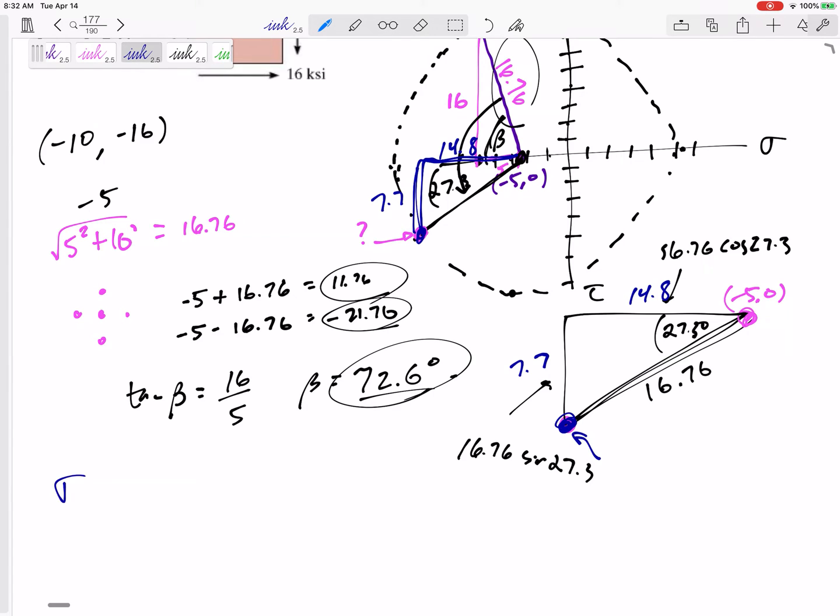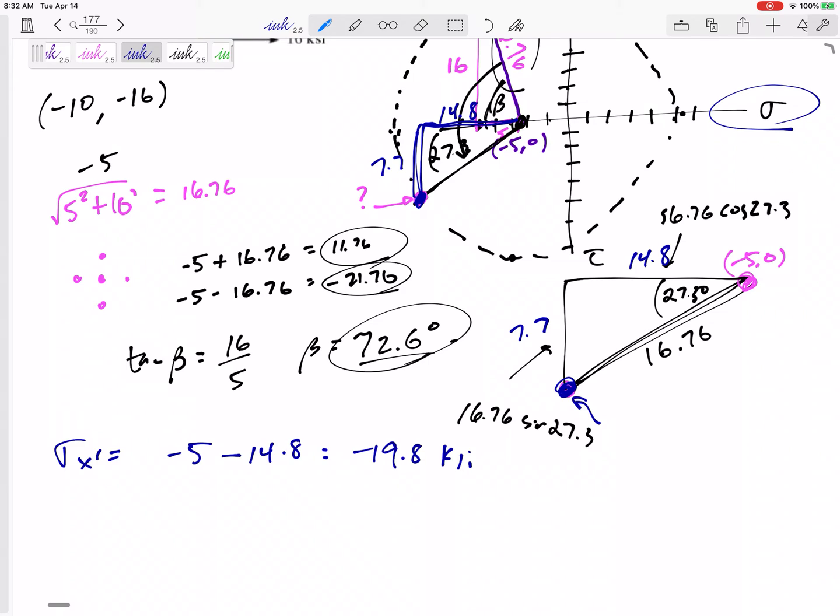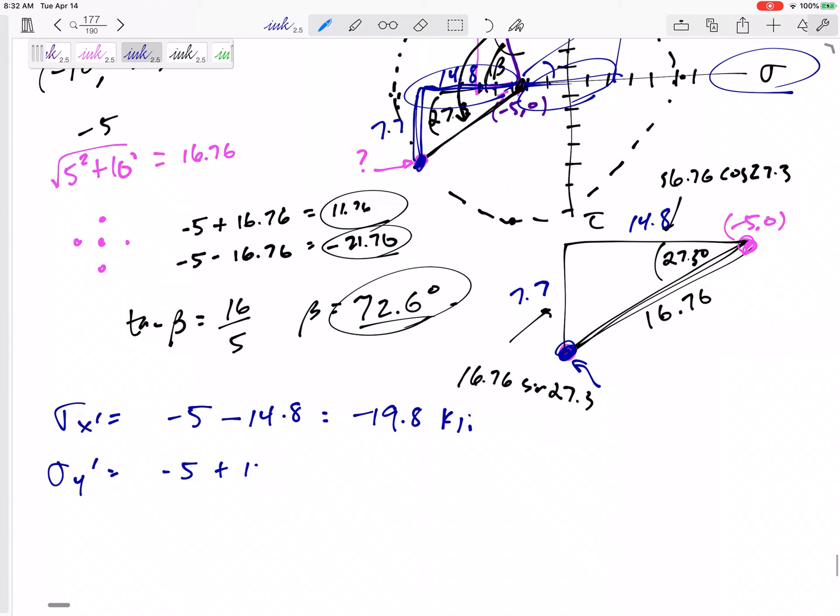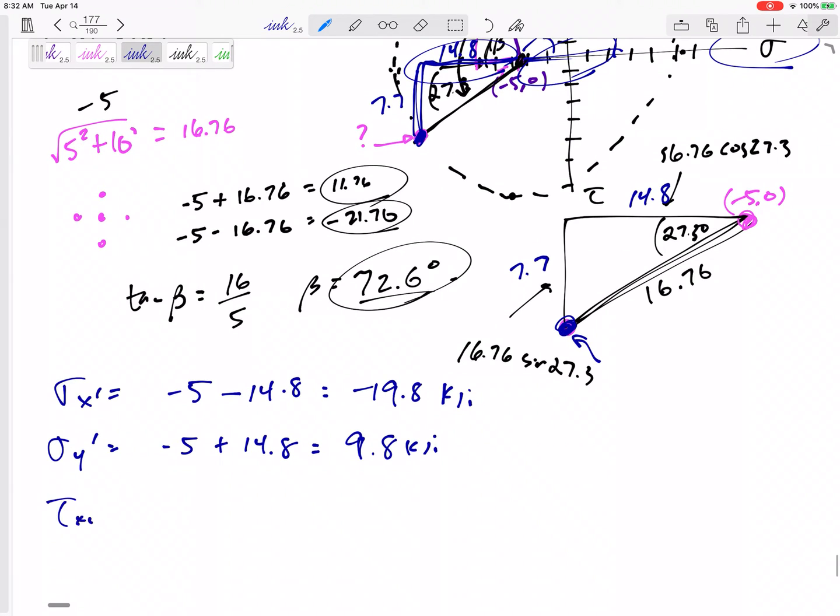What is this coordinate? If this height is 7.7 and base is 14.8, my sigma value is the x-coordinate. I already started negative 5 from the origin, then went 14.8 more. So negative 19.8 ksi is my new sigma x. Sigma y would be negative 5 plus 14.8, 9.8 ksi. My tau is 7.7 ksi.